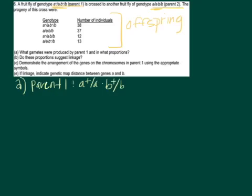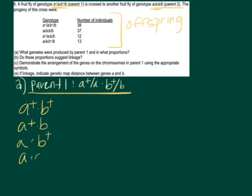So question A: what gametes were produced by parent one and in what proportions? Parent one is the dihybrid, or the double heterozygote. To determine what gametes parent one made, you can look at your offspring, especially since they give you the genotype of your offspring that are seen. If we look at parent one and do a Punnett square, we would try to figure out what are the possible gametes that parent one could make — parent one could make all four of those possible combinations. But do we actually see those in the offspring?